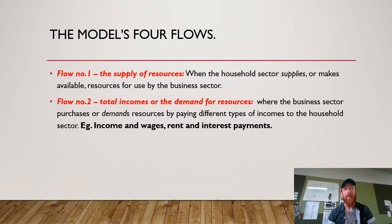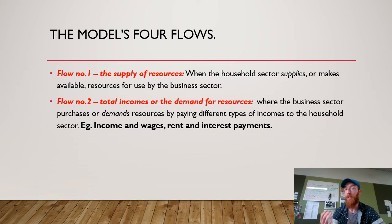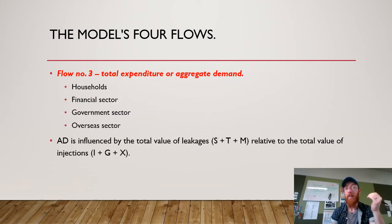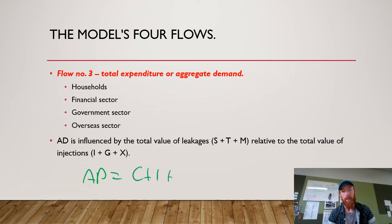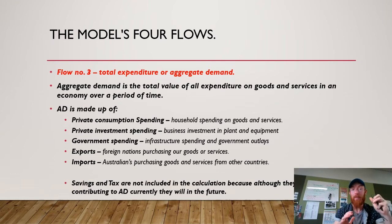That leads into our four main flows. Flow one is the resources that households provide to businesses so they can produce goods and services. Flow two is the total income or demand for resources — the business sector purchases or demands resources by paying different types of incomes to households: wages, rent, or interest repayments. Flow three is total expenditure or aggregate demand — AD equals C plus I plus G plus X minus M. Aggregate demand is influenced by the total value of leakages relative to the total value of injections.